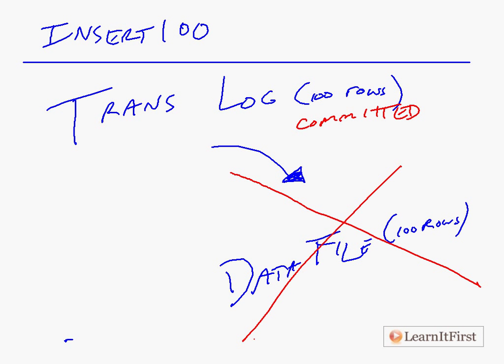This is a concept-level drawing — it's not exactly how things work in practice. I made it seem as though this were a synchronous or serial operation, meaning the 100 rows had to be written to the transaction log, then committed, and then written to the data file. In reality it's more complex than that.